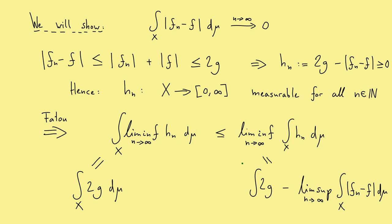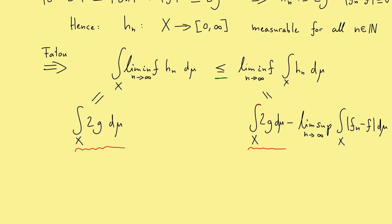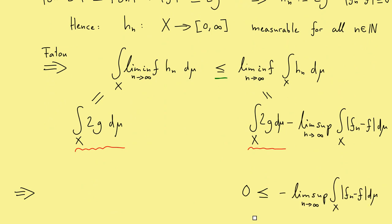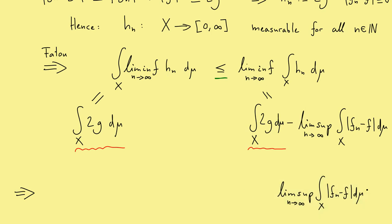With the left-hand side and the right-hand side assembled, we have a nice inequality. You will notice that the integral of 2g appears on both sides. Subtracting it from both sides, we find 0 on the left and on the right we have minus the limsup of the integral of |fn − f| dμ. The minus sign is not so beautiful, so bringing it to the other side gives us the limsup of the integral of |fn − f| dμ is less than or equal to 0.